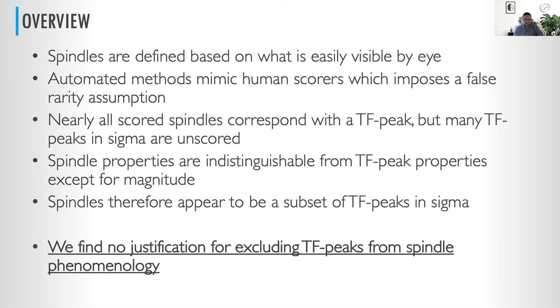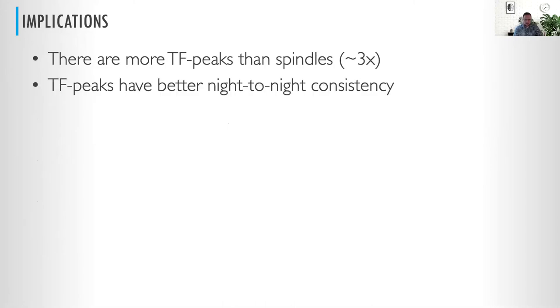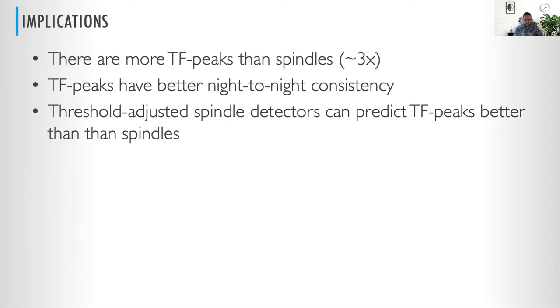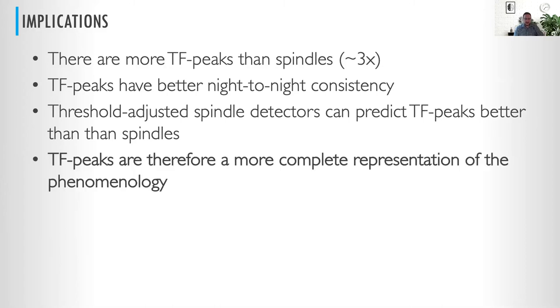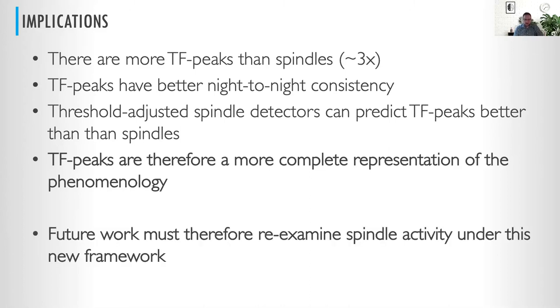The implications: we find no justification for excluding lower-amplitude TF peaks from spindle phenomenology analyses. There are about three times more TF peaks than scored spindles. They have better night-to-night consistency. Threshold-adjusted spindle detectors actually do a better job detecting TF peaks than spindles. Therefore, TF peaks in sigma are a more complete representation of the underlying phenomenology, and future work must re-examine spindle activity under this new and improved framework.